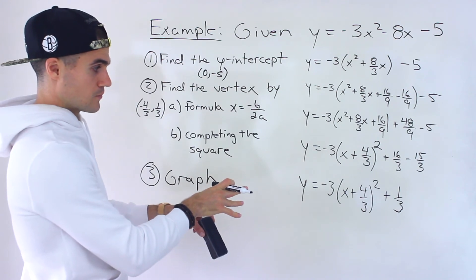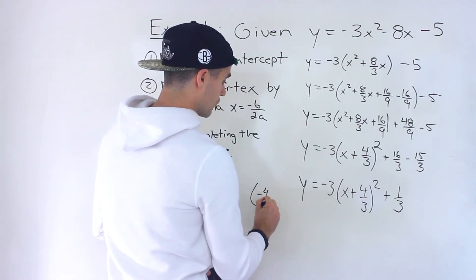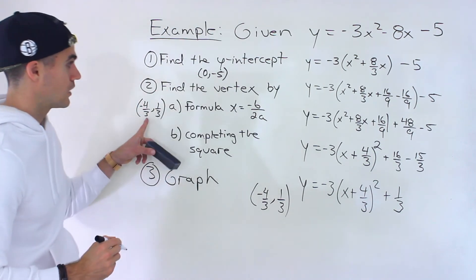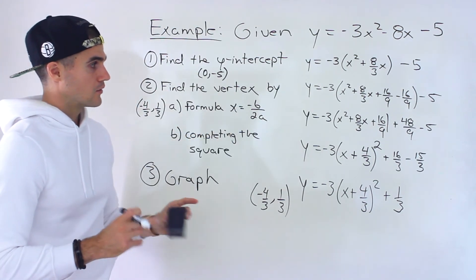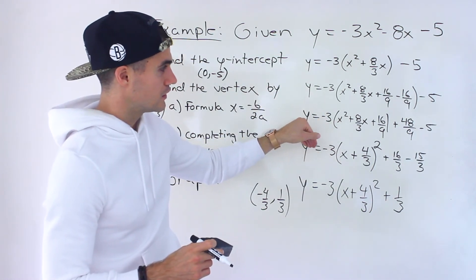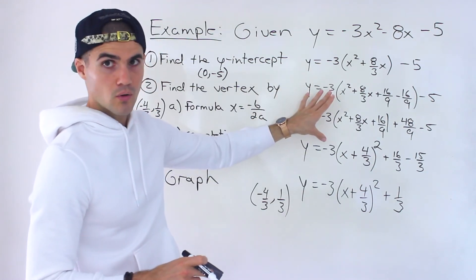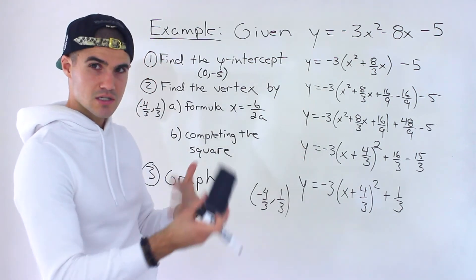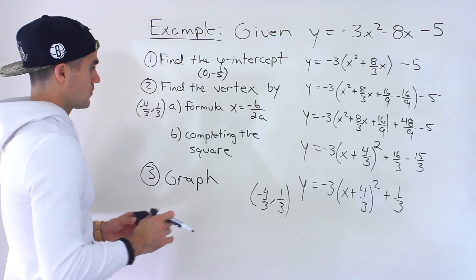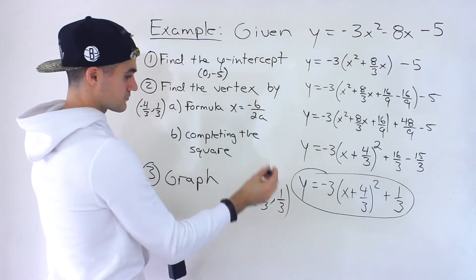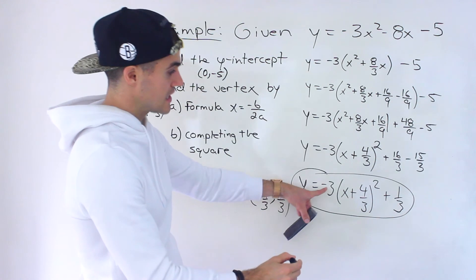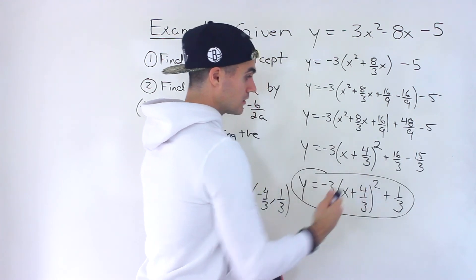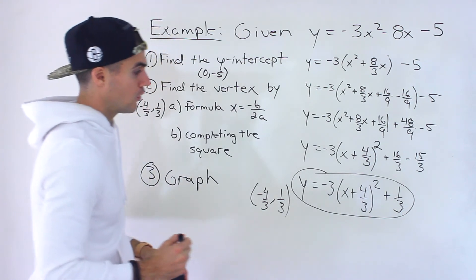From this vertex form we can see the vertex is (negative 4 over 3, 1 over 3) — it's always the opposite sign for the x-value — which matches what we got using the formula. A lot of the time completing the square involves integers and is simpler, but this example shows how to handle fractions. You can also verify by expanding the vertex form back out: FOIL the bracket, distribute the negative 3, and confirm you get back the original standard form.